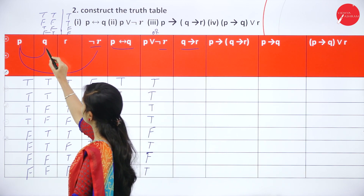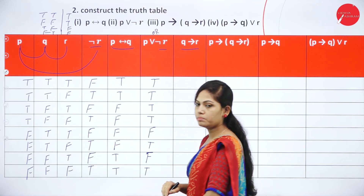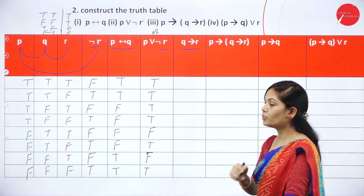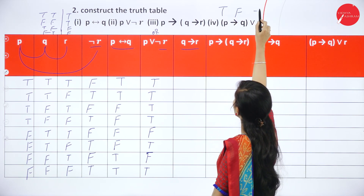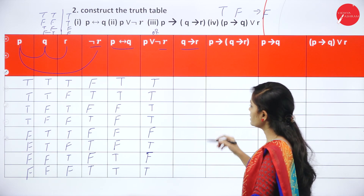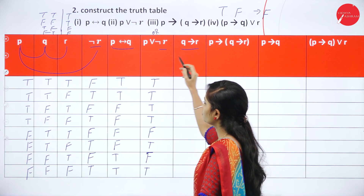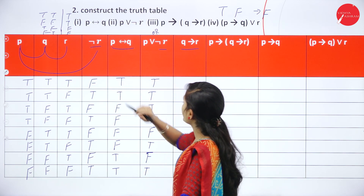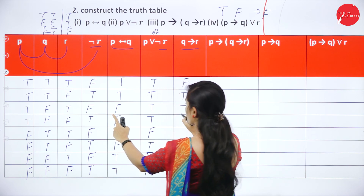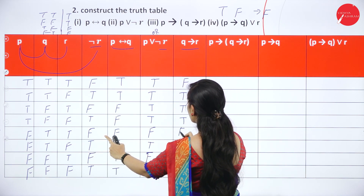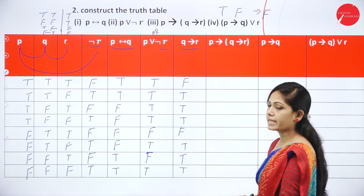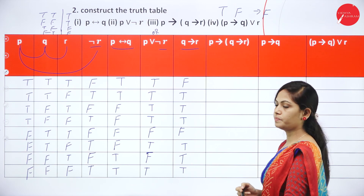Next, find Q → R using the Q column and R column with implication. In a conditional statement, all values are true except when the first statement is true and the second is false. So true → false = false; all other combinations are true. Apply this to get the Q → R column.